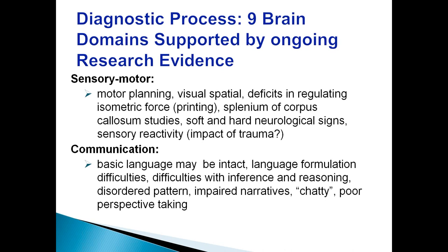Attentional difficulties are an extremely common comorbidity — over 65% of our children with FASD also have a comorbid diagnosis of ADHD. We see difficulties in both sustained attention, shifting, impulsivity, and intrusions. In the sensory motor area, motor planning difficulties are a common finding, as well as difficulties in the visual-spatial area, and difficulties regulating isometric force which impacts printing. This has been correlated with some differences in the splenium of the corpus callosum. Sensory reactivity is frequently reported across all age groups, but we have to be careful interpreting it because if a child has experienced a lot of pre- and postnatal trauma, sensory dysregulation may be the impact of trauma alone.